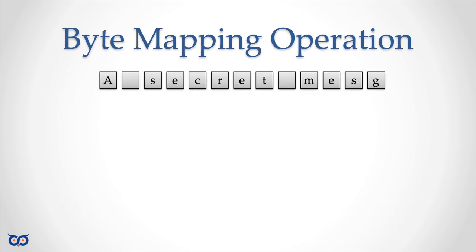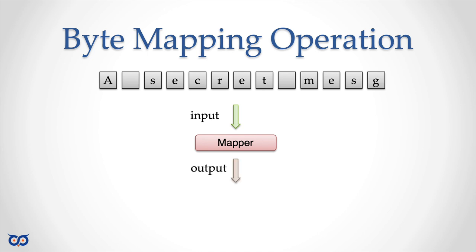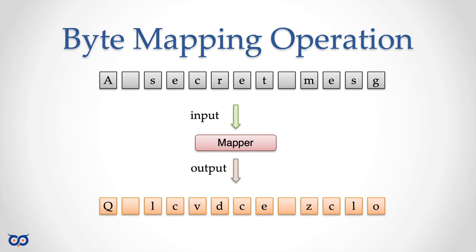We have a slice of bytes, and we can perform some binary operation on them. For example, I have some bytes that represent the message 'the secret message' — the blank ones are spaces. I want to feed this as input to some mapper — a mapper takes input, transforms it in some way, and produces output. Once I pass my bytes through the mapper, it produces this output. Now, is my message ciphered, or was it encoded in some way?